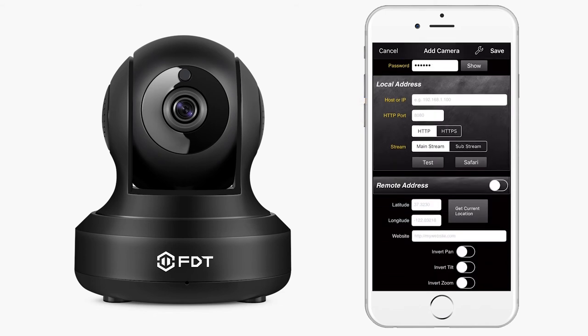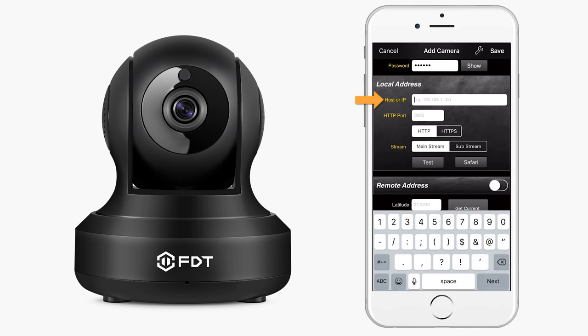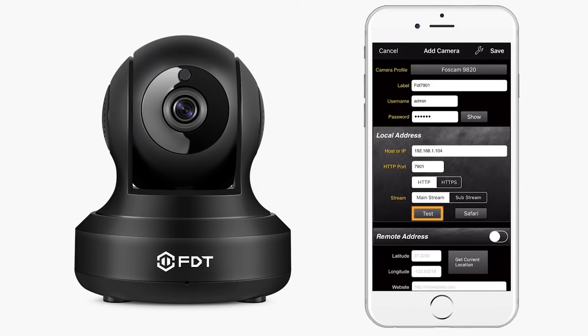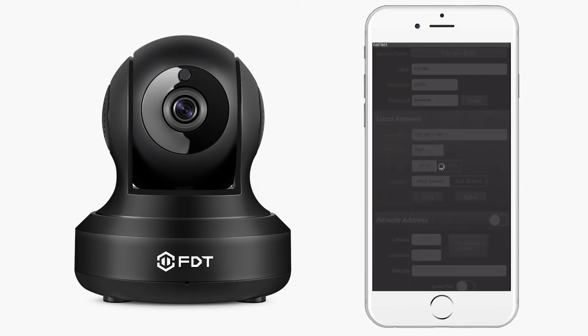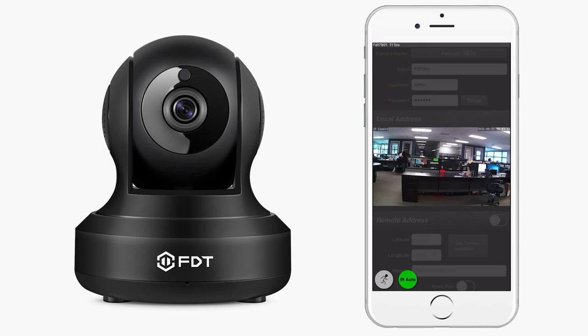Next, we will fill out the fields under Local Address. In the Host or IP field, type in the IP address of your camera that you noted earlier — for example, 192.168.1.104. In the HTTP port field, type in the port number you also noted earlier — for example, 7901. Then tap the Test button. If it appears live, then you have connected your camera successfully. If it appears unavailable, please review the information you filled out and try again.